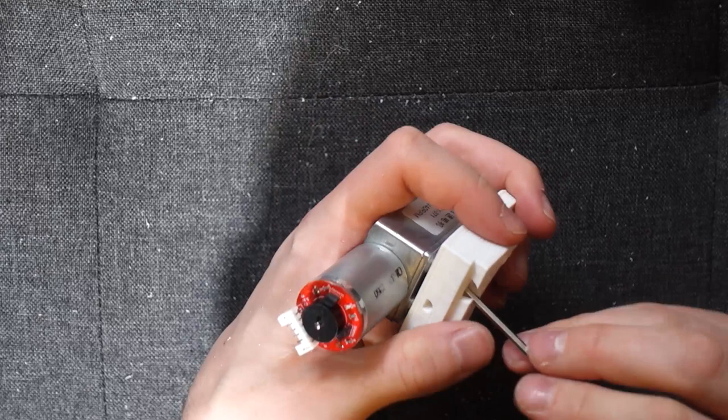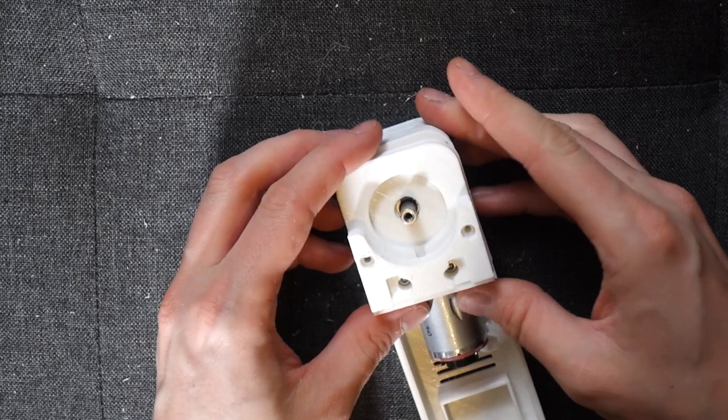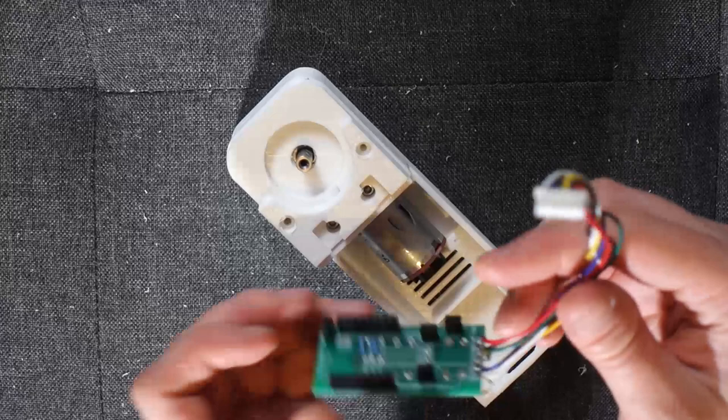Begin by using short screws to attach the gear surround to the motor. Check that this can now sit flush against the main body.